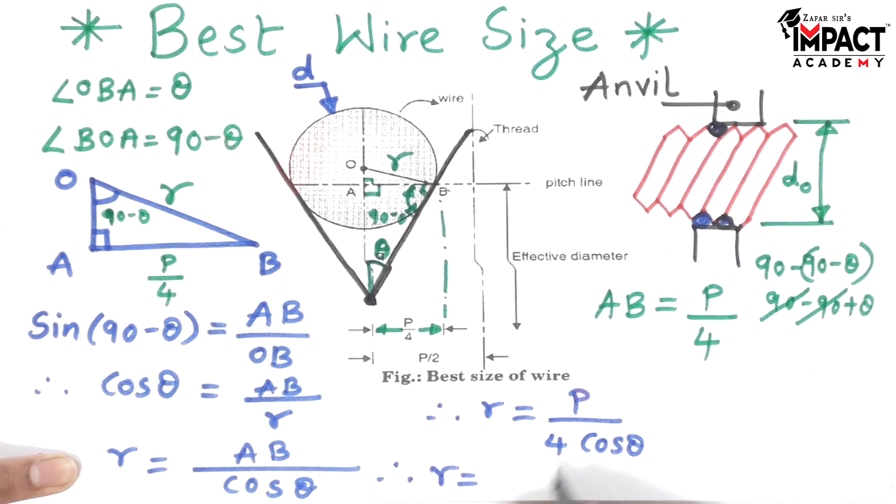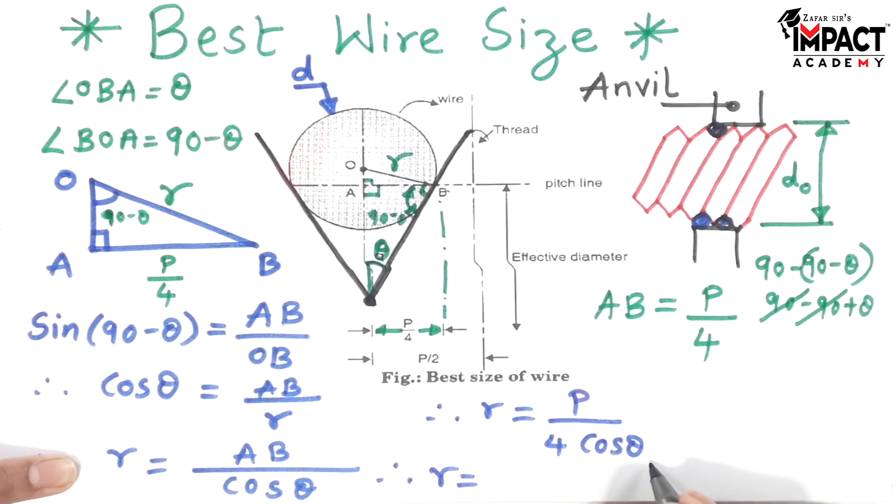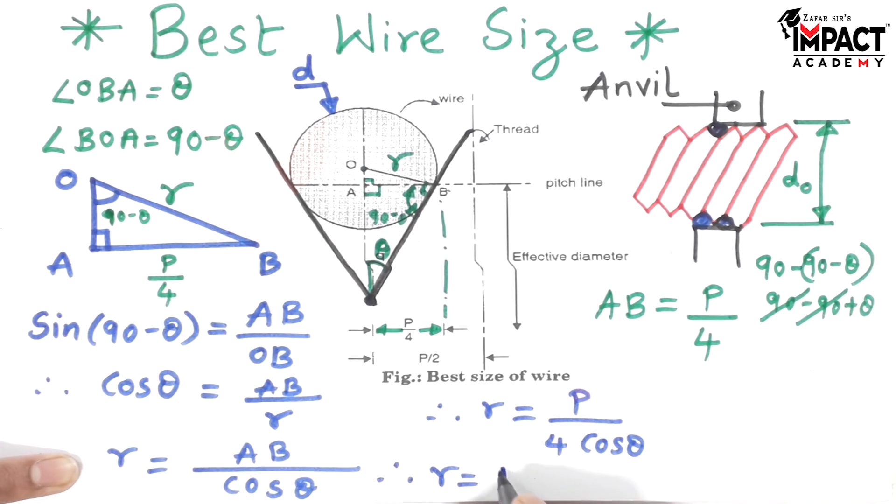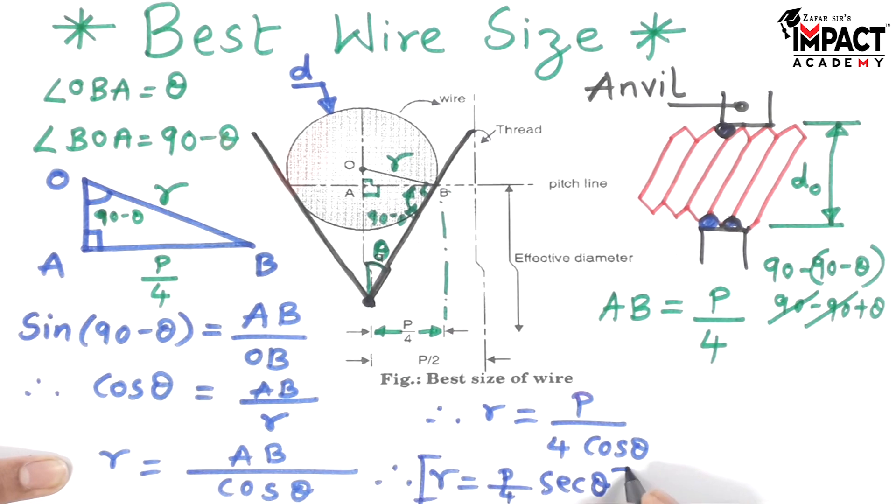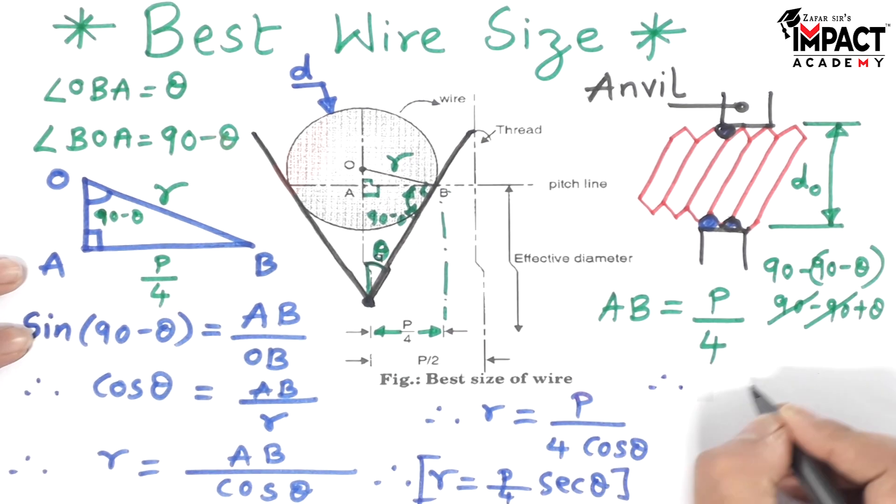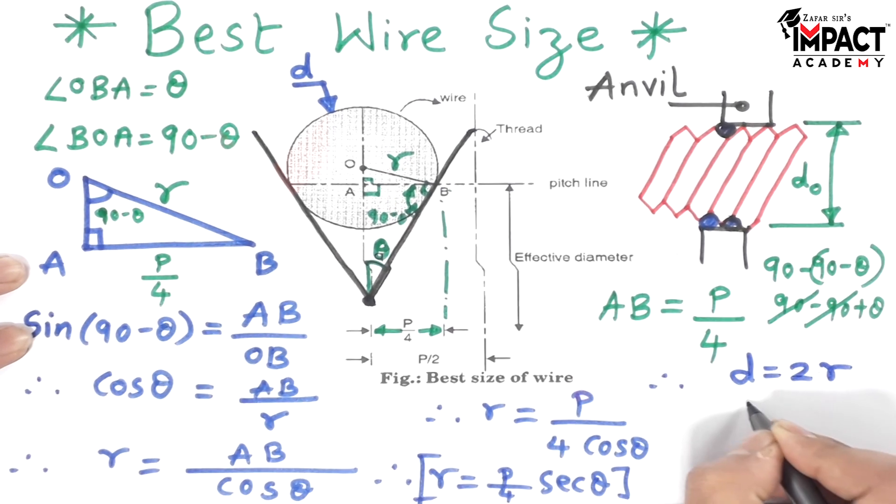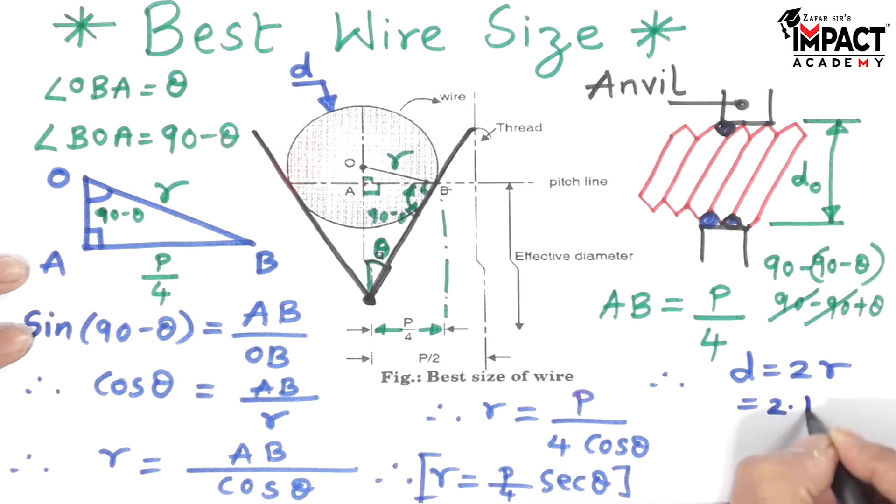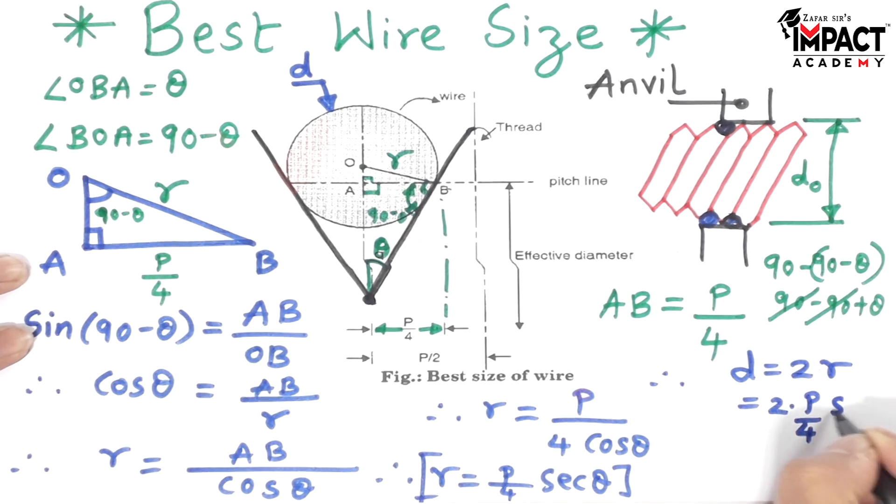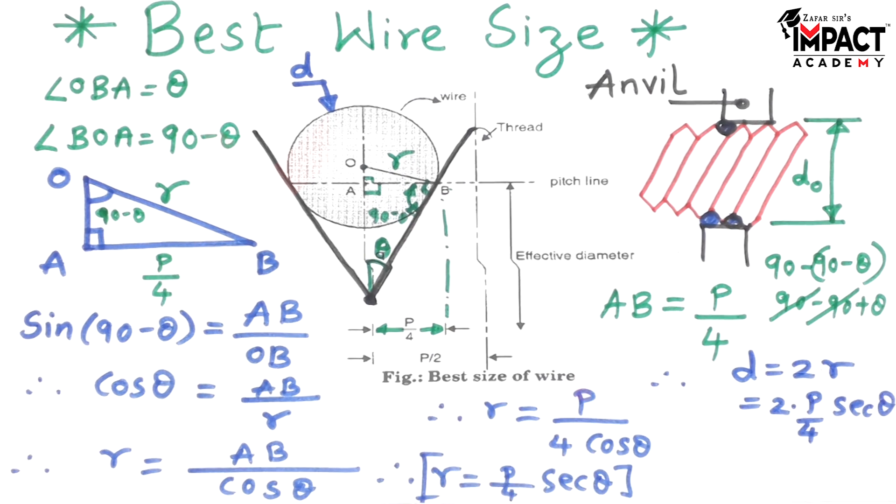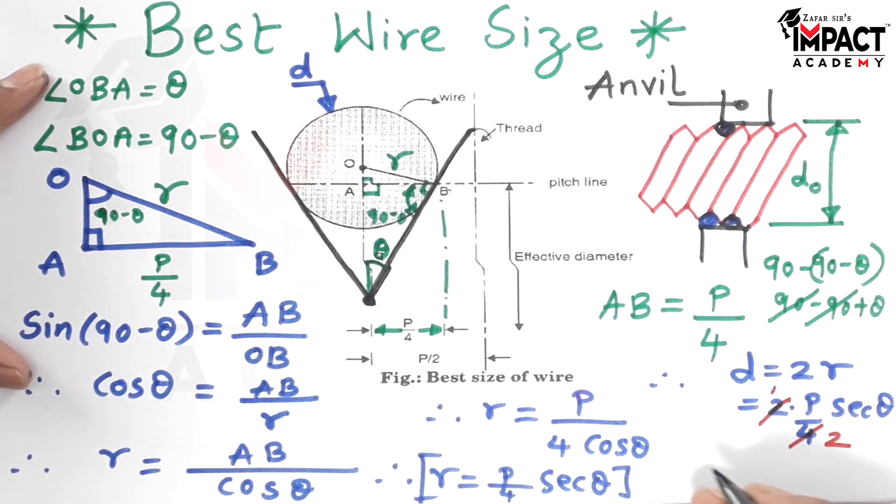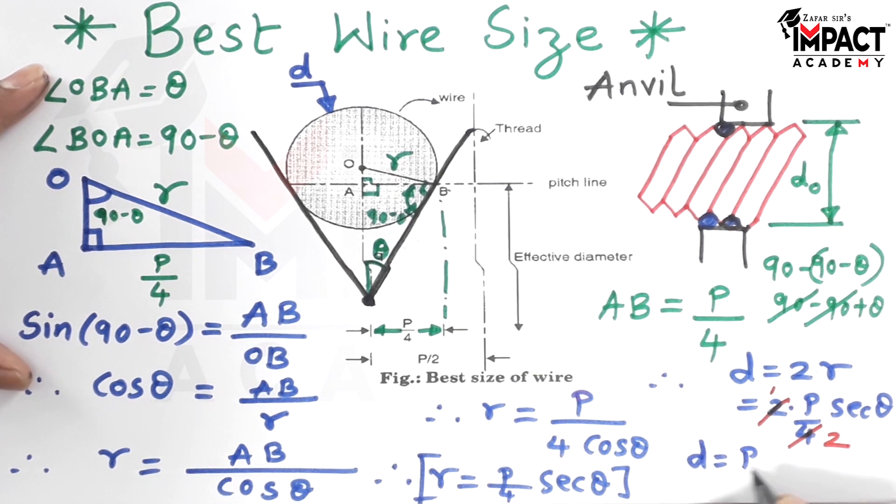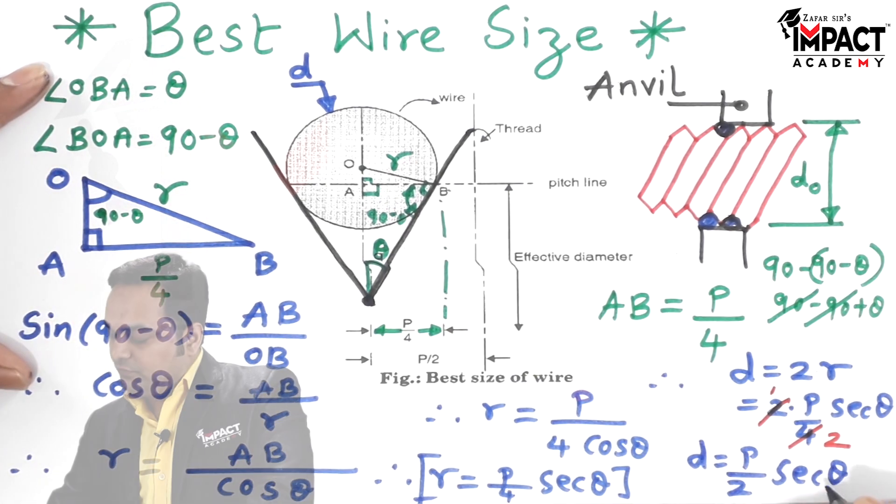Radius is known to us, so therefore the diameter would be twice of the radius. So it is 2 into pitch by 4 sec theta. So the final value of the diameter is d is equal to P by 2 sec theta.